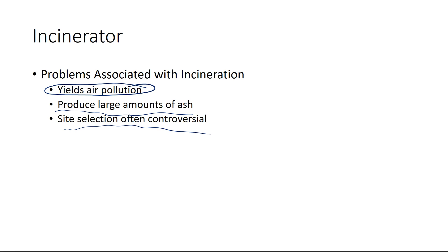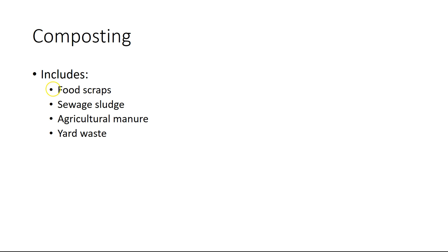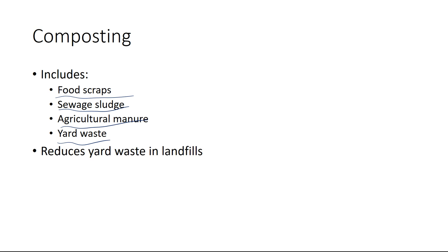Composting is an important option. The types of things we can compost include food scraps, sewage sludge, agricultural manure, and yard waste like grass clippings and leaf litter. Not all facilities will take items containing fats or oils. Sewage sludge, after being properly treated, can be composted, as can agricultural manure. A key benefit of composting is that it reduces the volume of waste going to landfills.